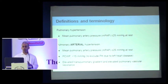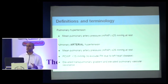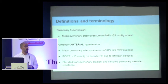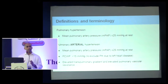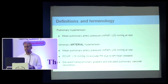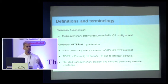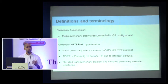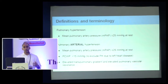Definitions and terminology are important. Pulmonary hypertension simply means high blood pressure in your pulmonary vessels — a mean PA pressure over 25 millimetres of mercury at rest. But pulmonary arterial hypertension is a completely different beast. Please be careful about the terminology. When someone tells me pulmonary arterial hypertension, I assume they have done all the necessary workup to come to that diagnosis.